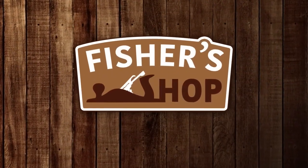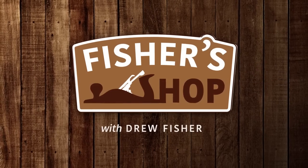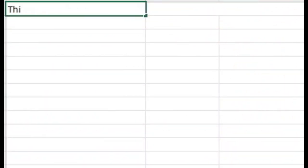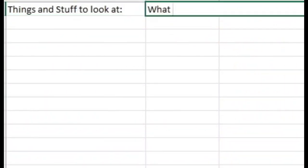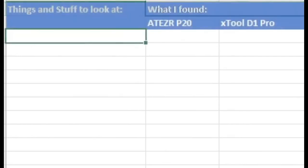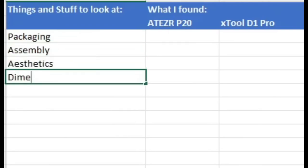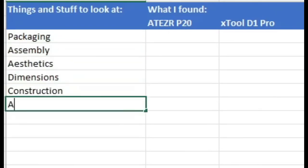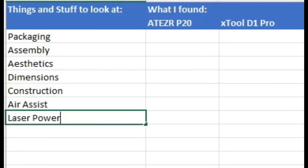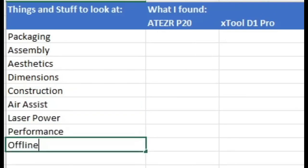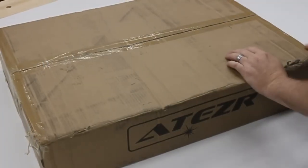Alright, so the first thing to do is to put together a super fancy scientific looking spreadsheet where I can record all my findings. I'll be comparing a variety of different aspects of each machine starting with the packaging that they came in, the assembly process, overall aesthetics, their dimensions, the quality of construction, air assist, the laser modules, performance, offline capabilities, and the available accessories. And lastly, I'll talk about the price of each machine.